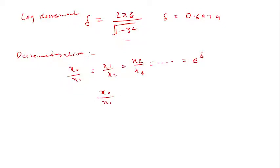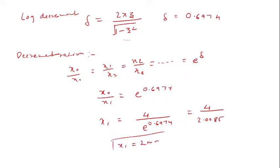So what we have to calculate here: we have to calculate x₁. x₀ is given as 4 mm, and it will be divided by e^0.6974. It will be nothing but 4 divided by 2.0085. Your x₁ will be 2 mm.